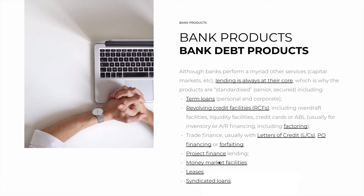Another type is money market facilities, which are usually unsecured short-term loans for businesses. They are usually for small operational needs. Maybe a company turns to the bank and says, hey, we need 1 million to pay back in 30 days. If they're creditworthy, the bank will accept that.